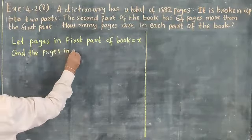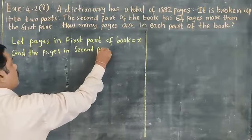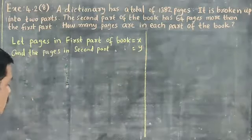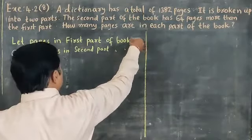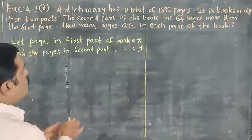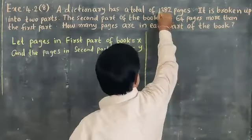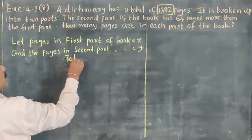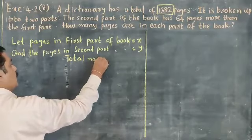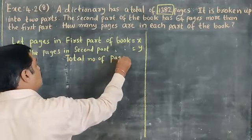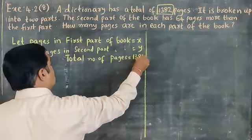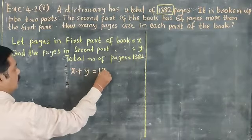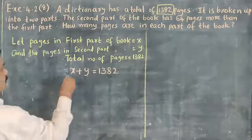Pages in the second part of the book is equal to y. Now, the first part pages plus second part pages gives the total pages, which is 1382. So the total number of pages is equal to 1382. We write: x plus y is equal to 1382.